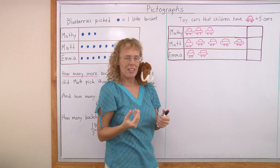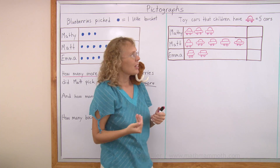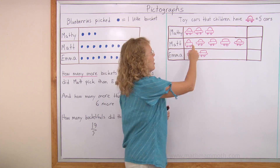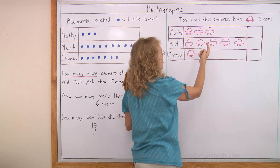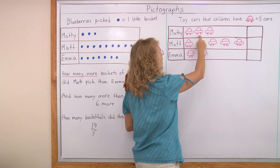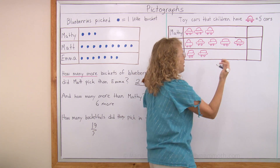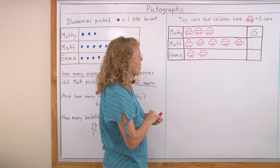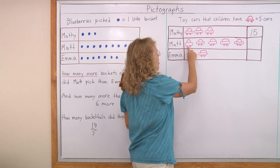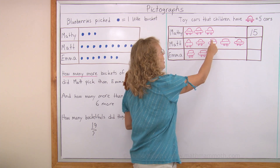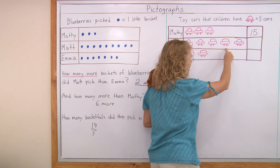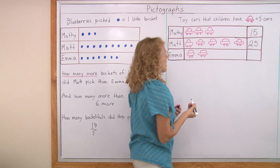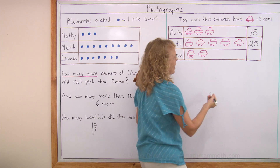So how many cars does Matthew actually have? You have to count by fives. Five and five more and five more, so it becomes five, ten, fifteen. Matthew has fifteen. Now let's check Matt: five, ten, fifteen, twenty, twenty-five. And lastly, Emma has five and five — that's ten.